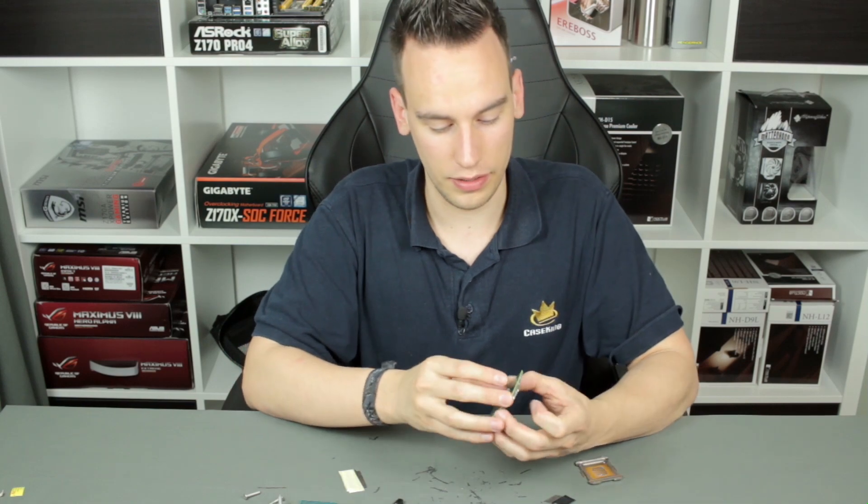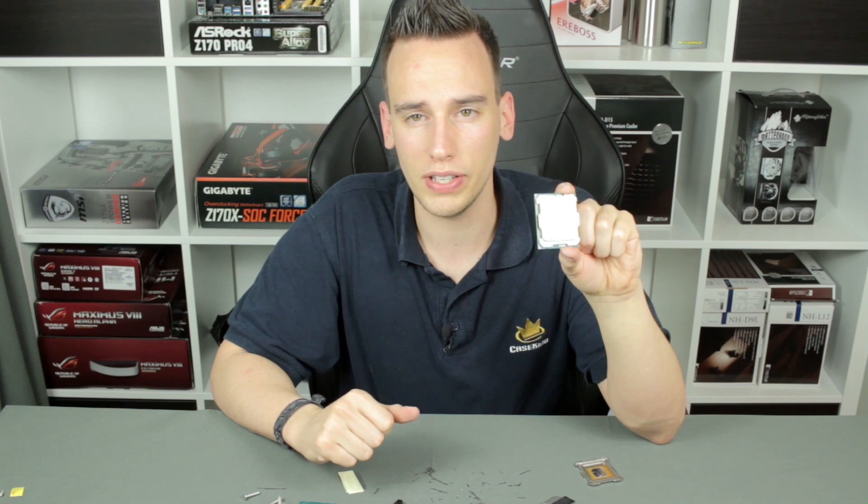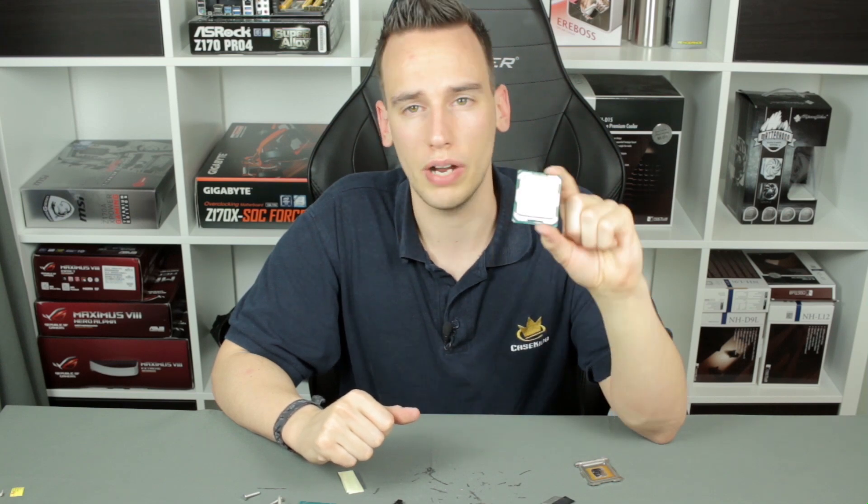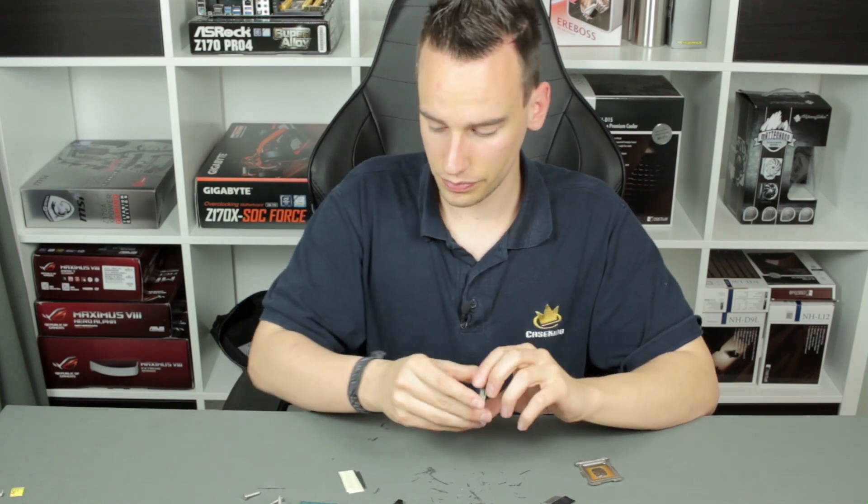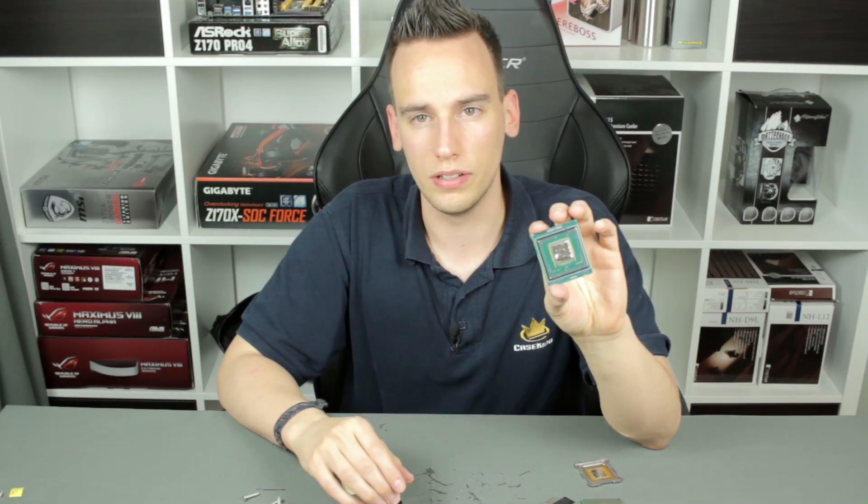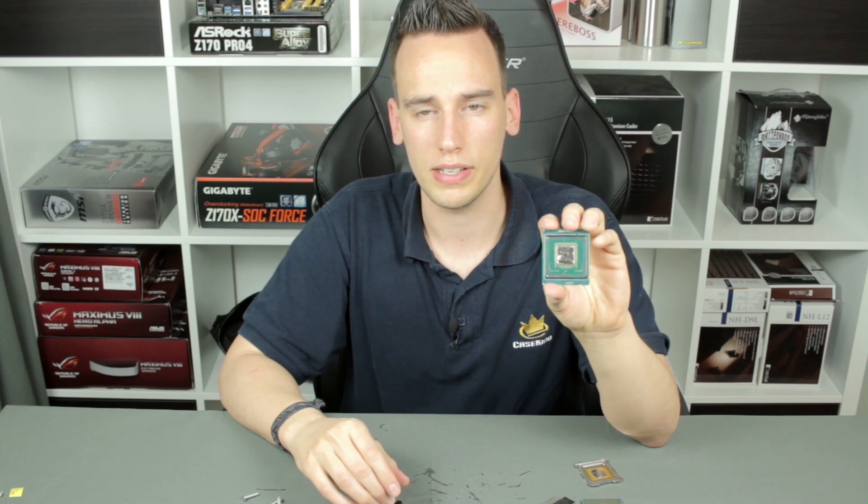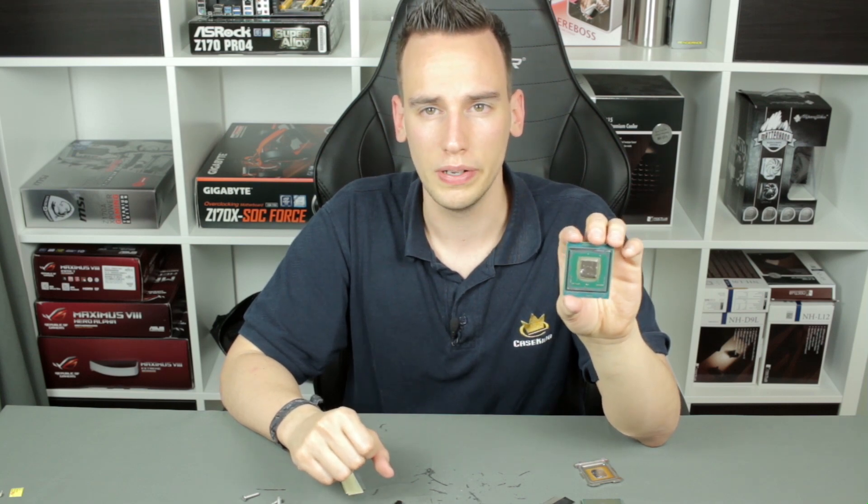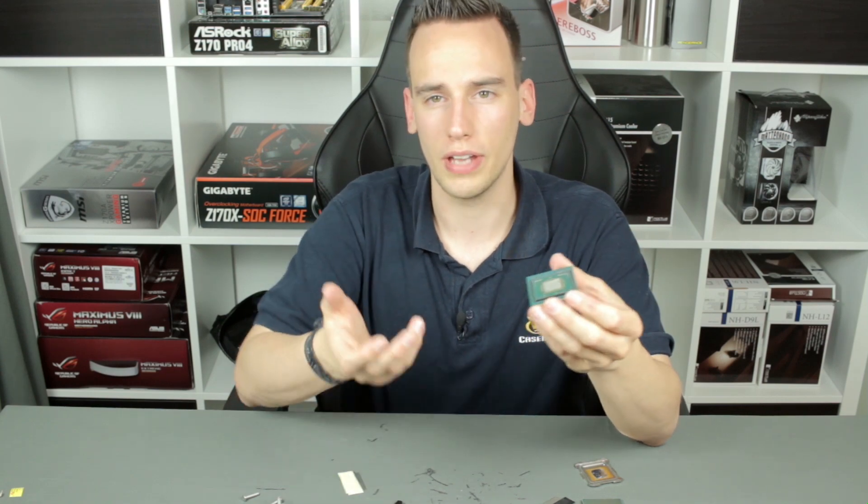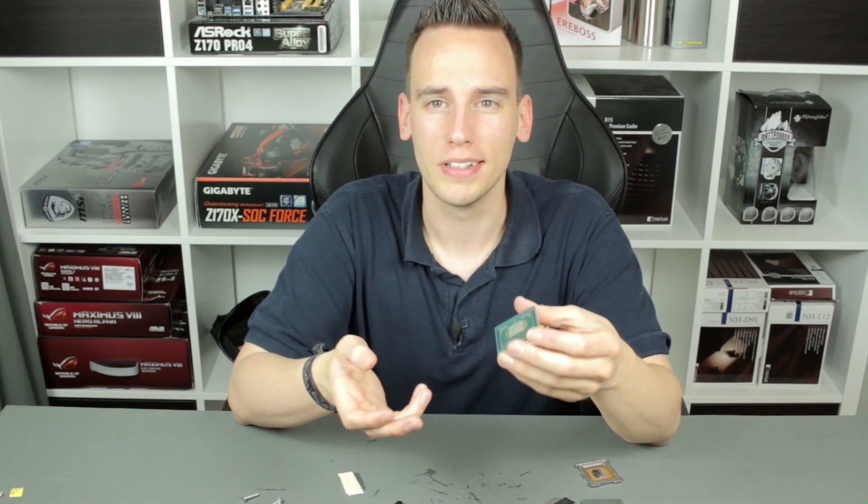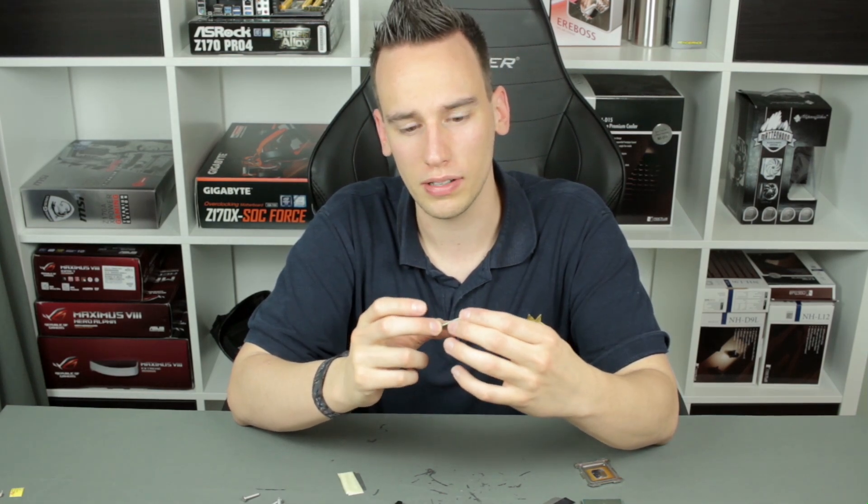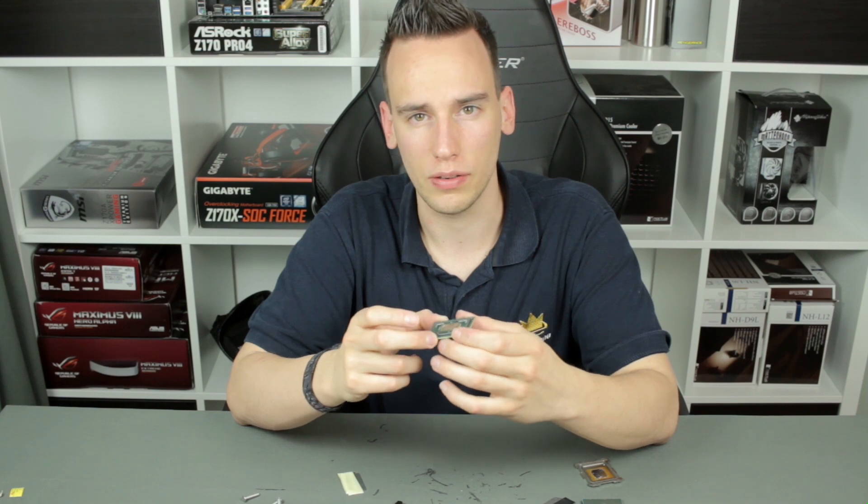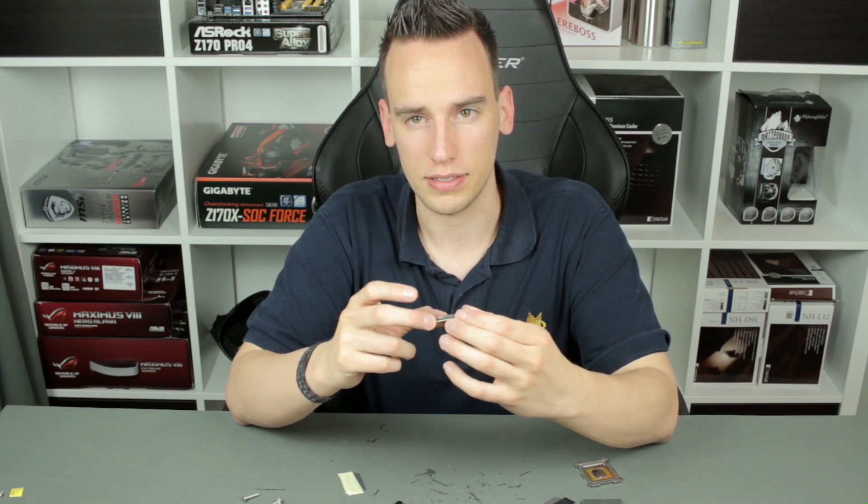So yeah, this is the Core i7 6950X 10-core, around 1.5k USD, and this is a successfully delidded Core i7 6950X 10-core CPU. The problem is I don't have unlimited CPUs at the moment, so we will just use the footage I took from the German tutorial, and I will just explain once again what I did there. So let's take a look at this.